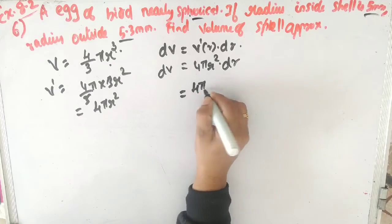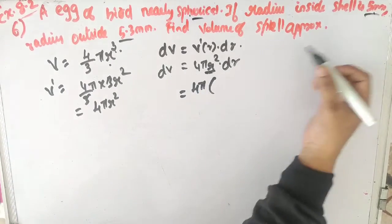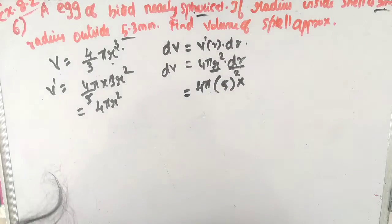Now r equals the old value, which is 5mm. So we have 4π times 5² times dr.